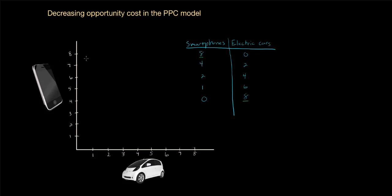Let's start by plotting the points on our production possibilities table on our graph. We first have a point at zero electric cars and eight smartphones. Then we've got a point at two electric cars and four smartphones. Then a point at four electric cars and two smartphones. Next, six electric cars and one smartphone.